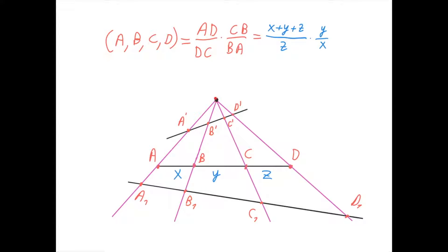Suppose this is just a random point, and this here is a random line. Then connecting this random point with a, b, c, and d, we get these four purple lines, and they intersect this black line at the points a prime, b prime, c prime, and d prime. Then the cross ratio AD divided by DC times CB divided by BA would be the same as the cross ratio a prime d prime divided by d prime c prime times c prime b prime divided by b prime a prime.